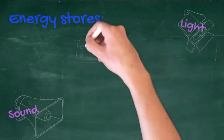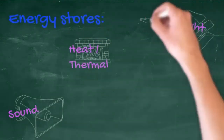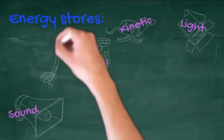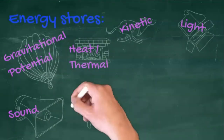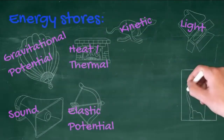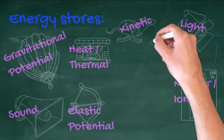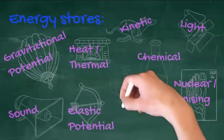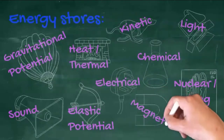The different types of energy tend to be called energy stores by the exam board. These include: sound, light, heat (or properly thermal energy), kinetic — the energy due to movement — gravitational potential energy to do with the gain in height, elastic energy stored in a spring or a bow and arrow, nuclear from the nucleus of an atom, chemical in chemical reactions such as batteries, electrical, and potentially also magnetic, though this one's a bit debatable.